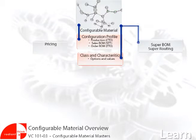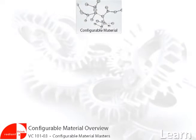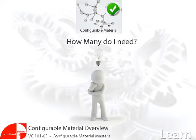Standard pricing for variant configuration uses the configurable material as the central object. In deciding your configurable materials, the question is: how many do I need? At one extreme, you could have one material that could be used for the entire product offering of complex products. However, is that practical? This question can be answered yes or no.